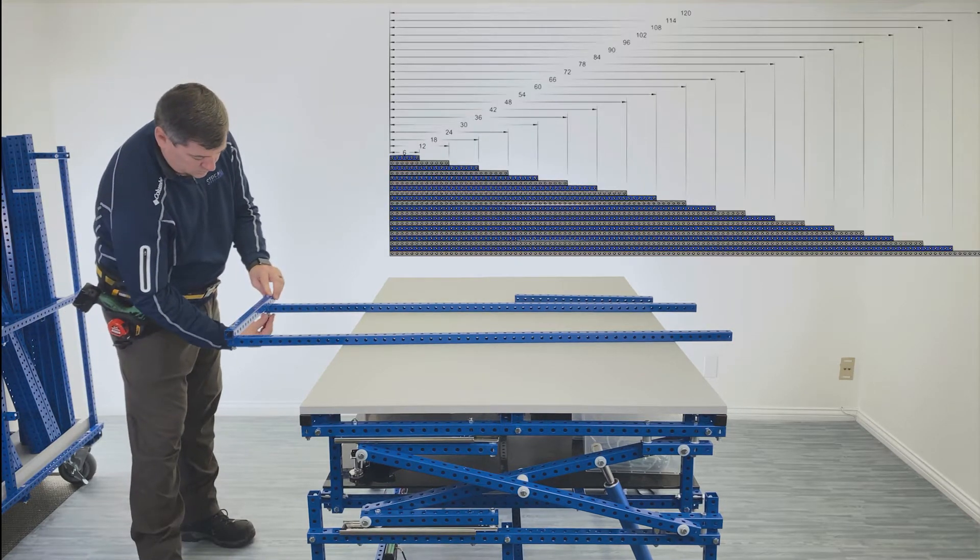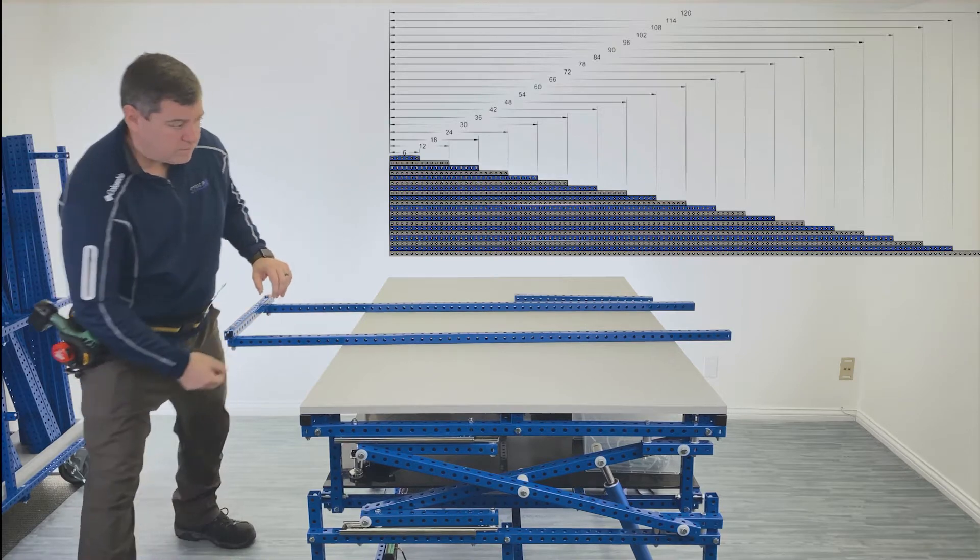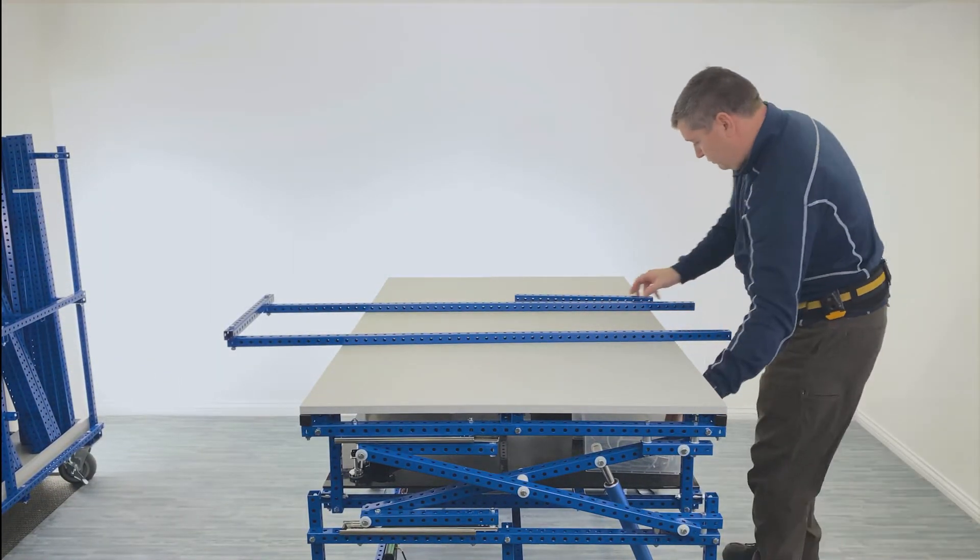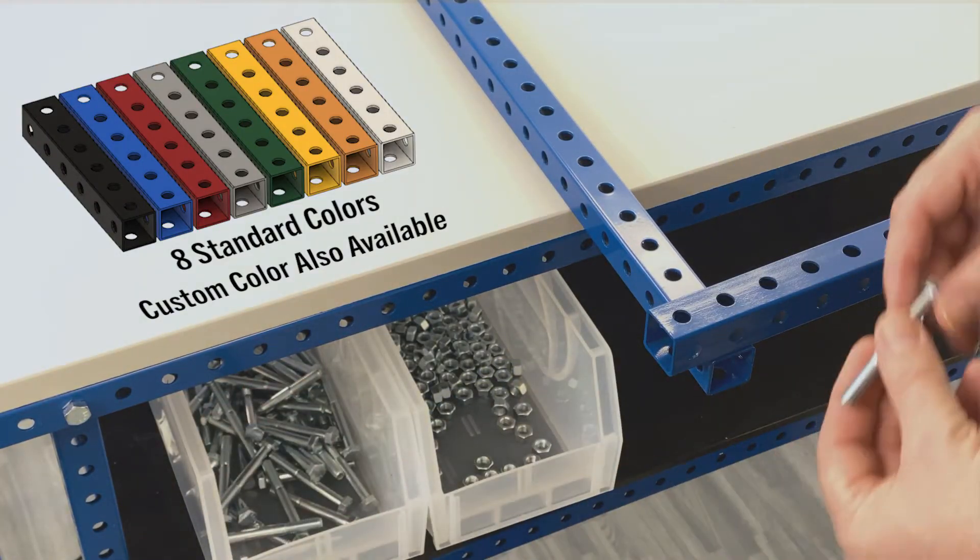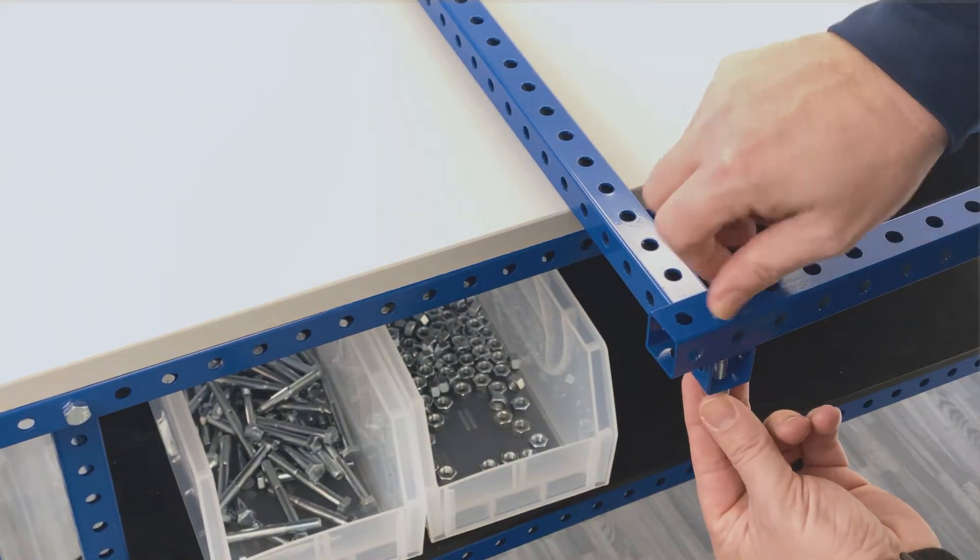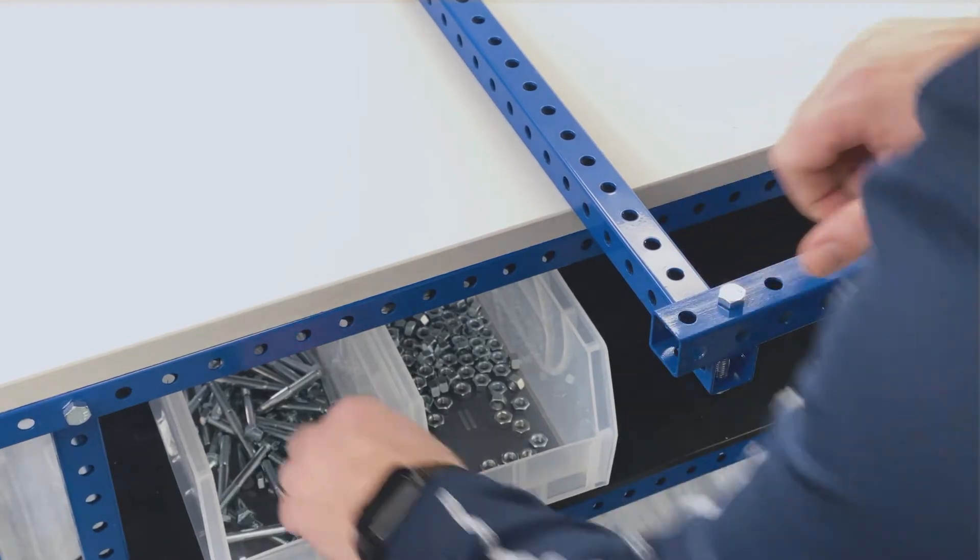Tube comes standard in 6 inch increments starting at 6 inches all the way up to 120 inches or 10 feet. Tube is available in 8 standard colors or custom color of your choice. The blue tube you see here is by far the color of choice for most customers.